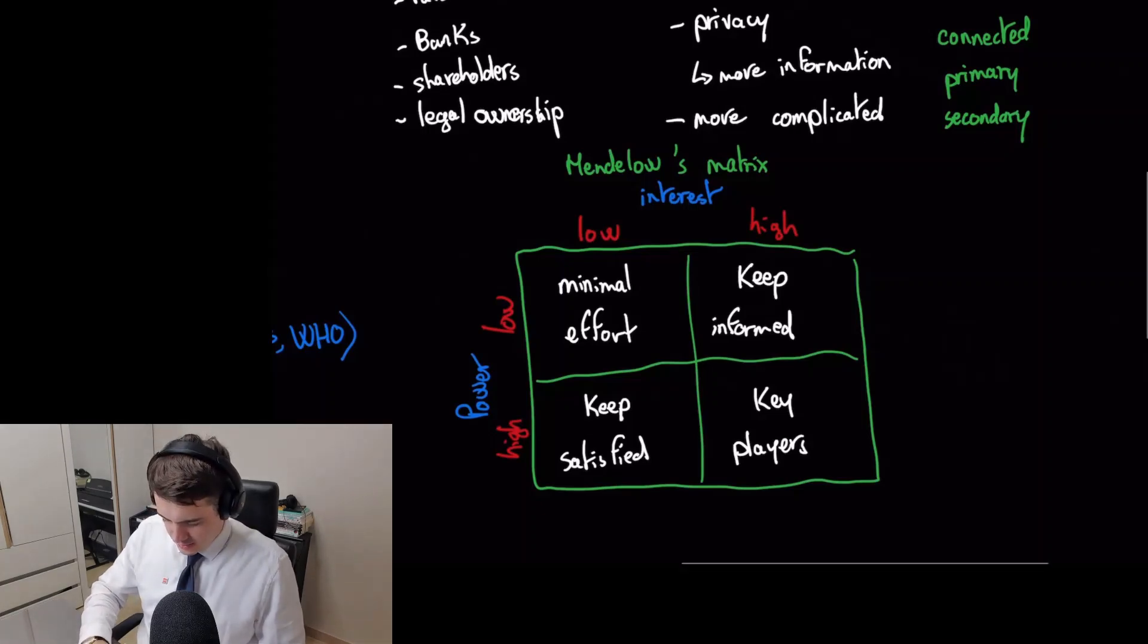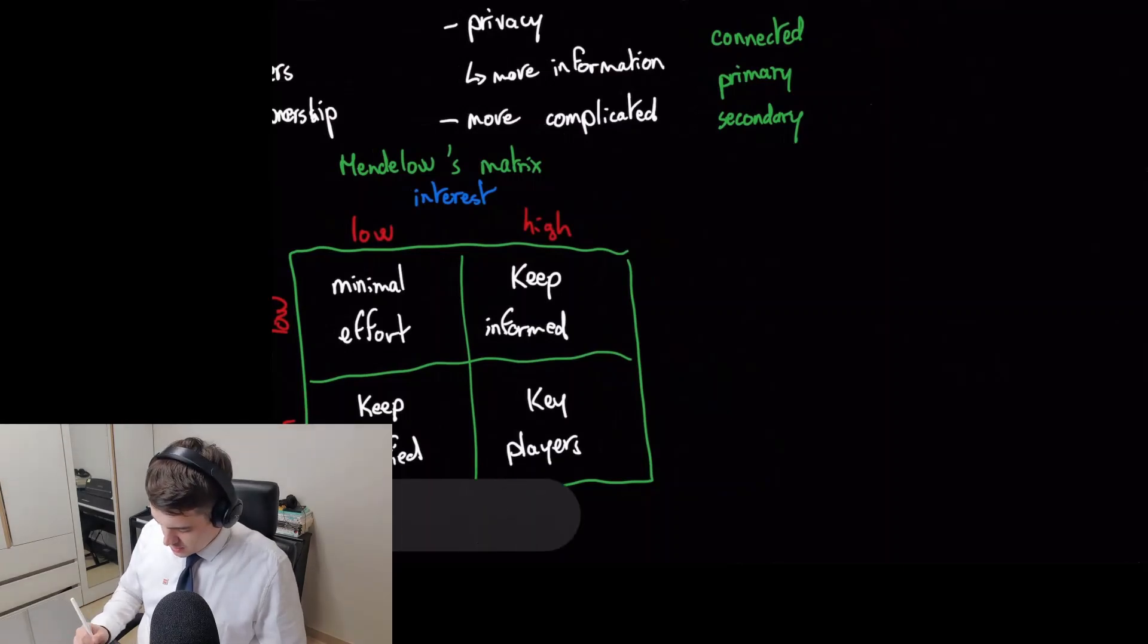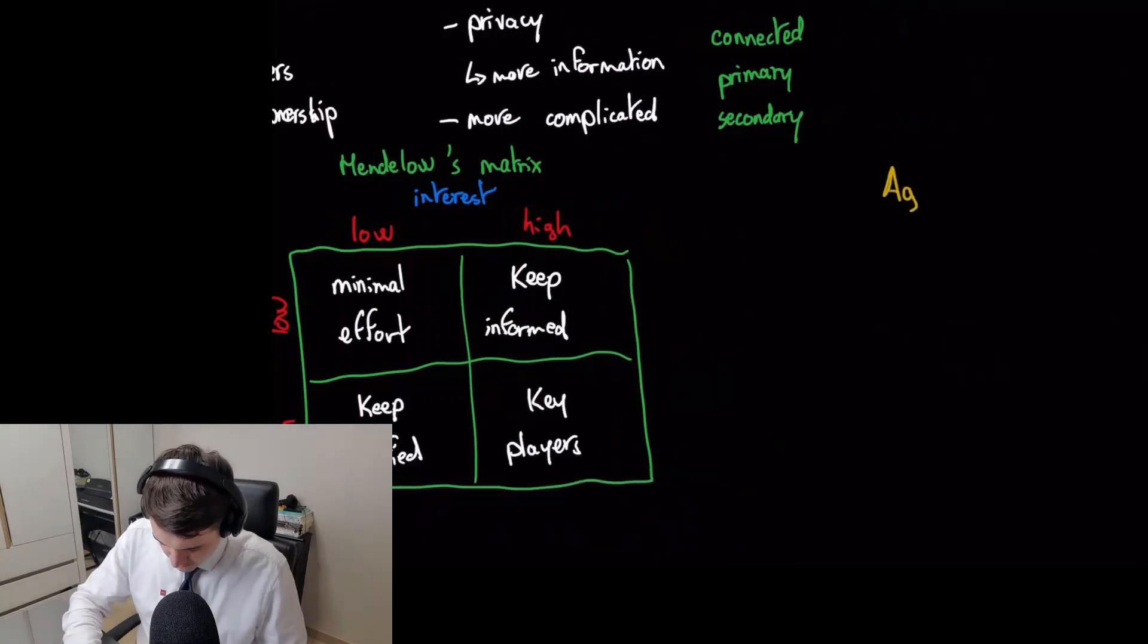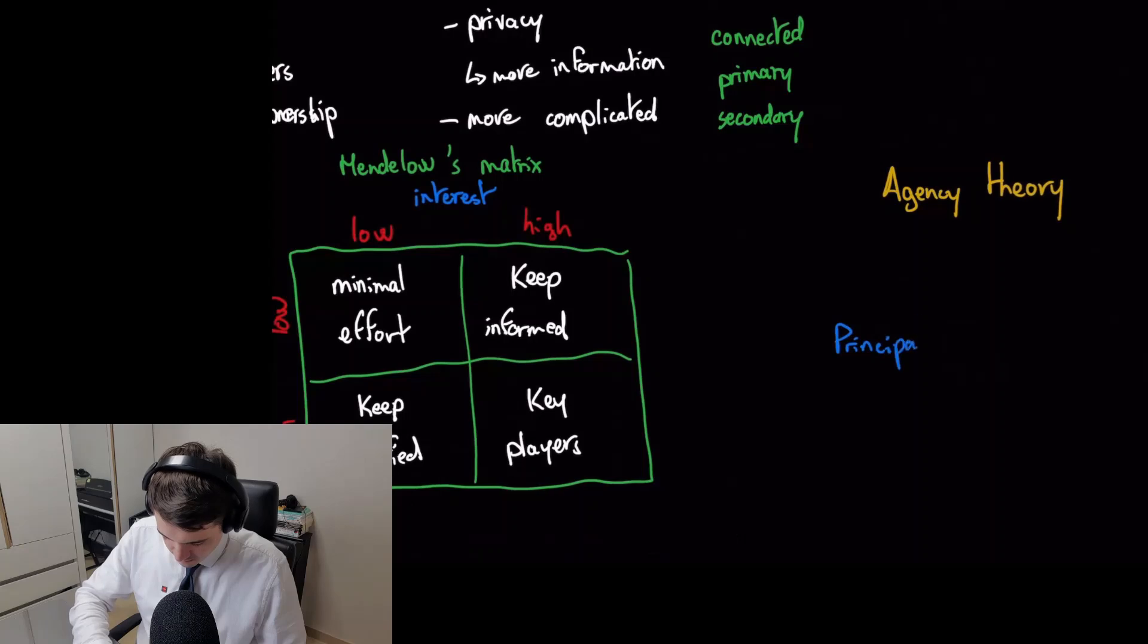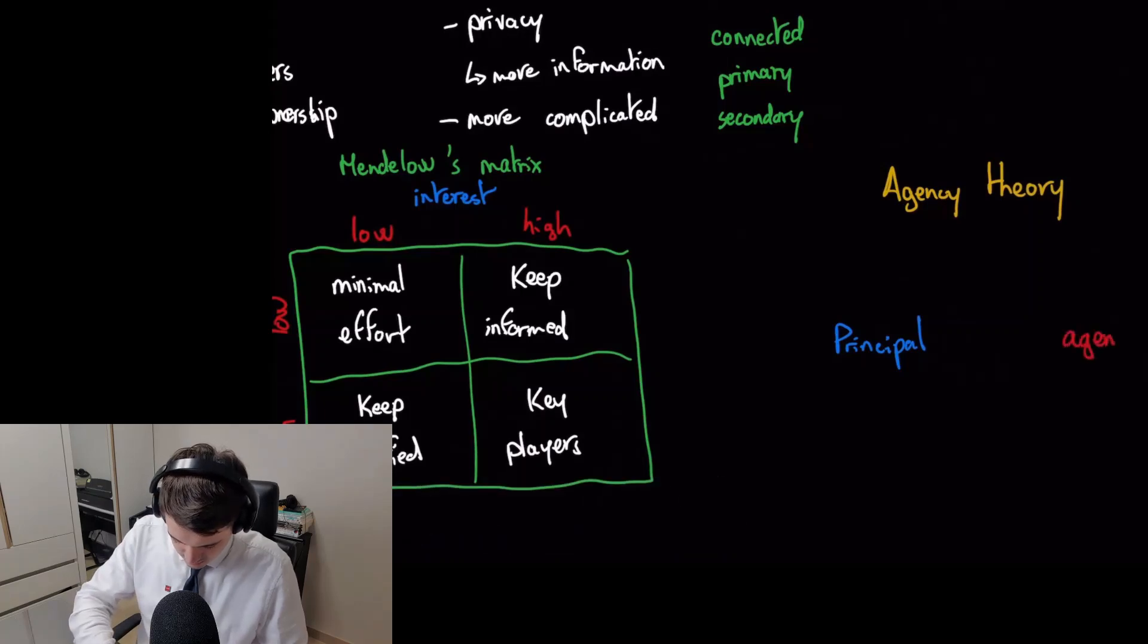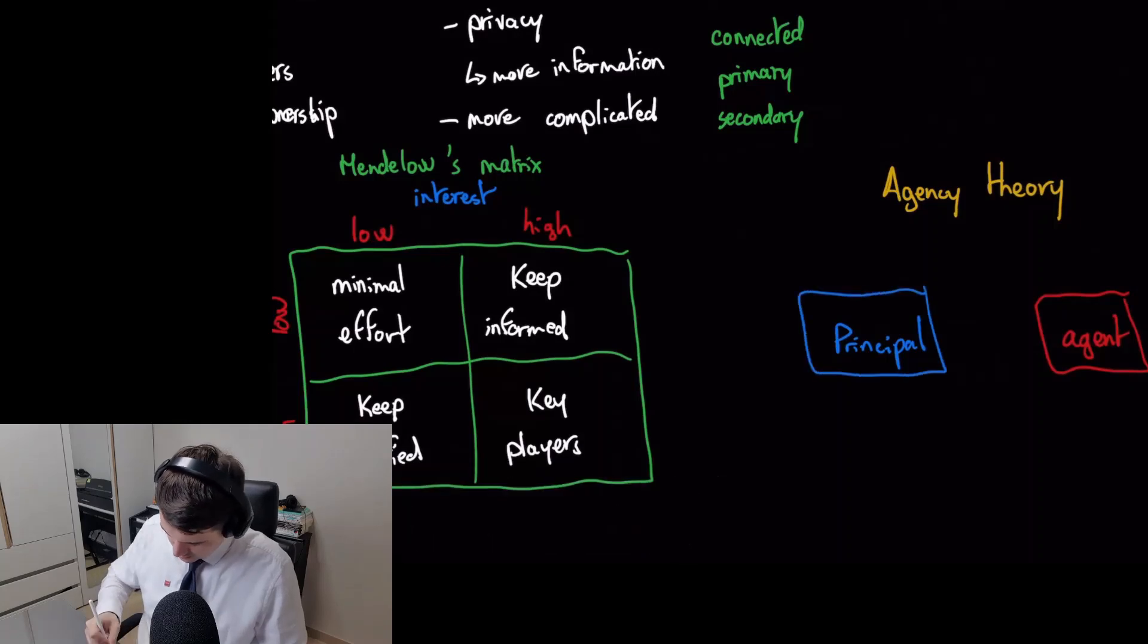Now a quick mention, which is connected to stakeholders, is the agency problem or agency relationship. So the agency theory is the idea that you have a principal and an agent, and there is a relationship.